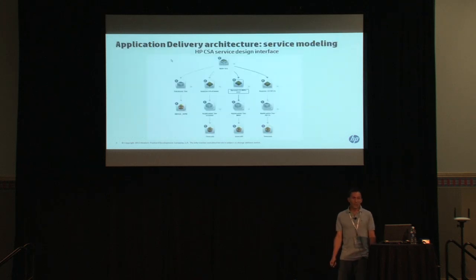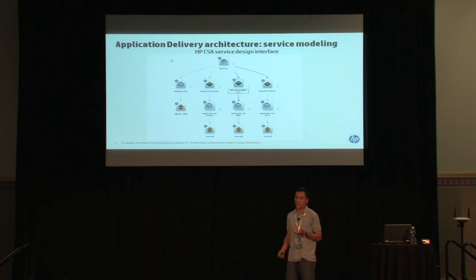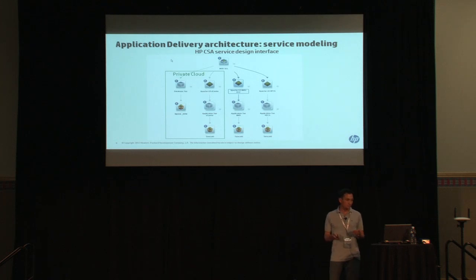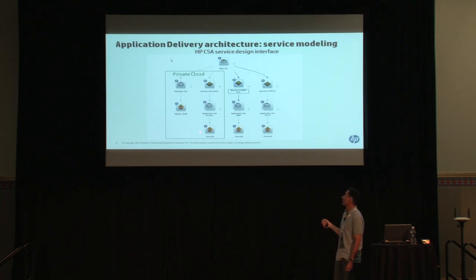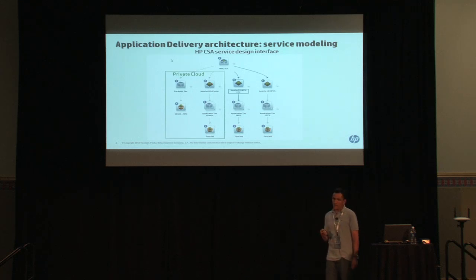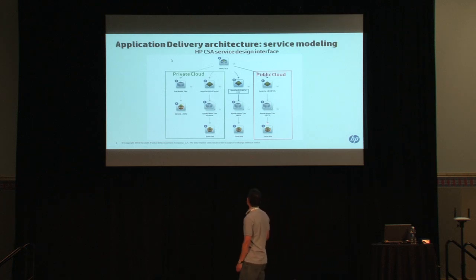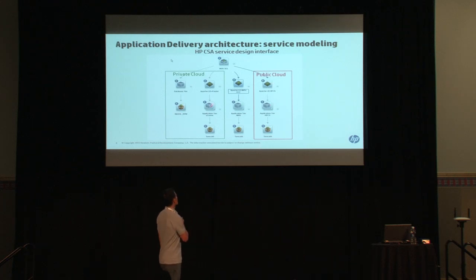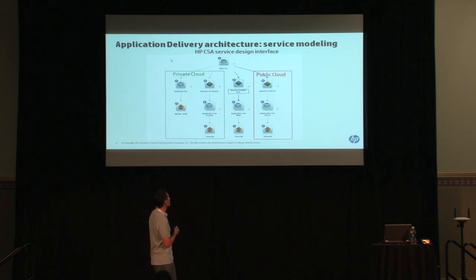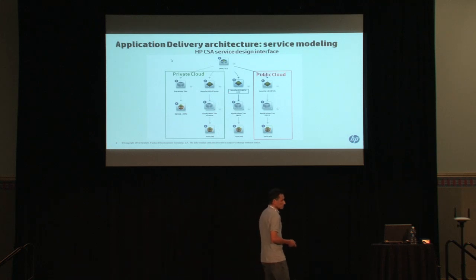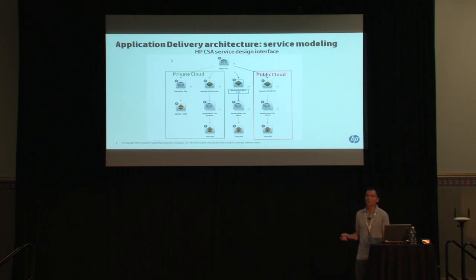The next step is how do you design the service. We want an abstraction layer that allows you to configure multiple layers on a single pane of glass. We configured the private cloud environment with a database tier component and a load-balanced application tier. Once we burst into the public cloud, we add an additional tier that's load balanced with the same environment. You could also burst into an EC2 public cloud — we did that in our prototype — from the exact same service design model.